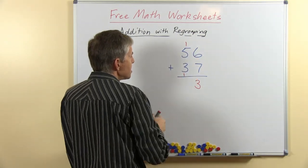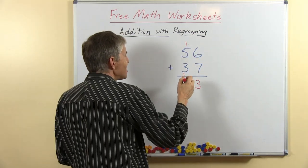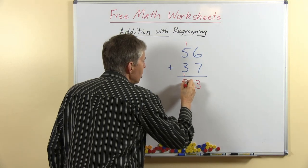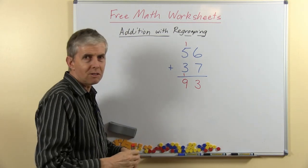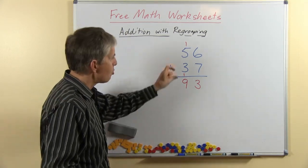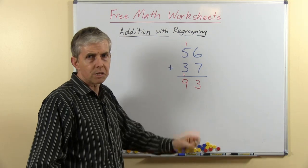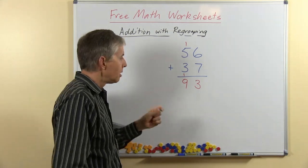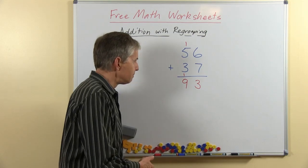Anyway, then we do the tens, 5 and 3 is 8, and 1 is 9. We could refer to that as 50 plus 30 plus 10, but one of the benefits of using algorithms is that you're only dealing with single digit sums at the one time.